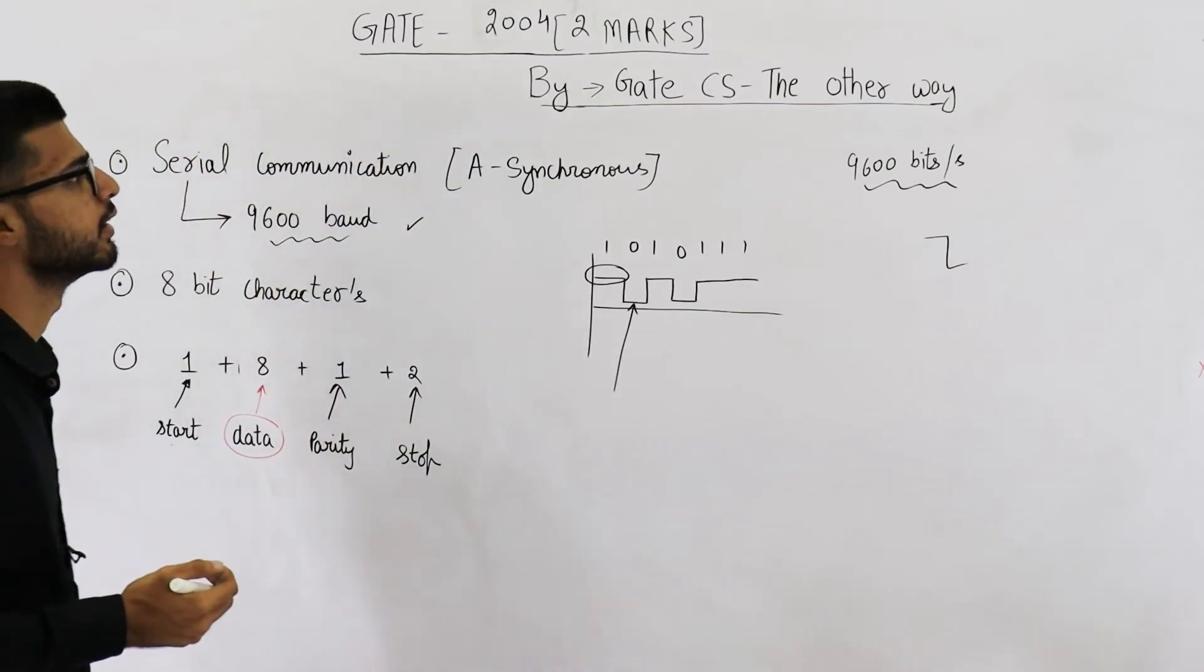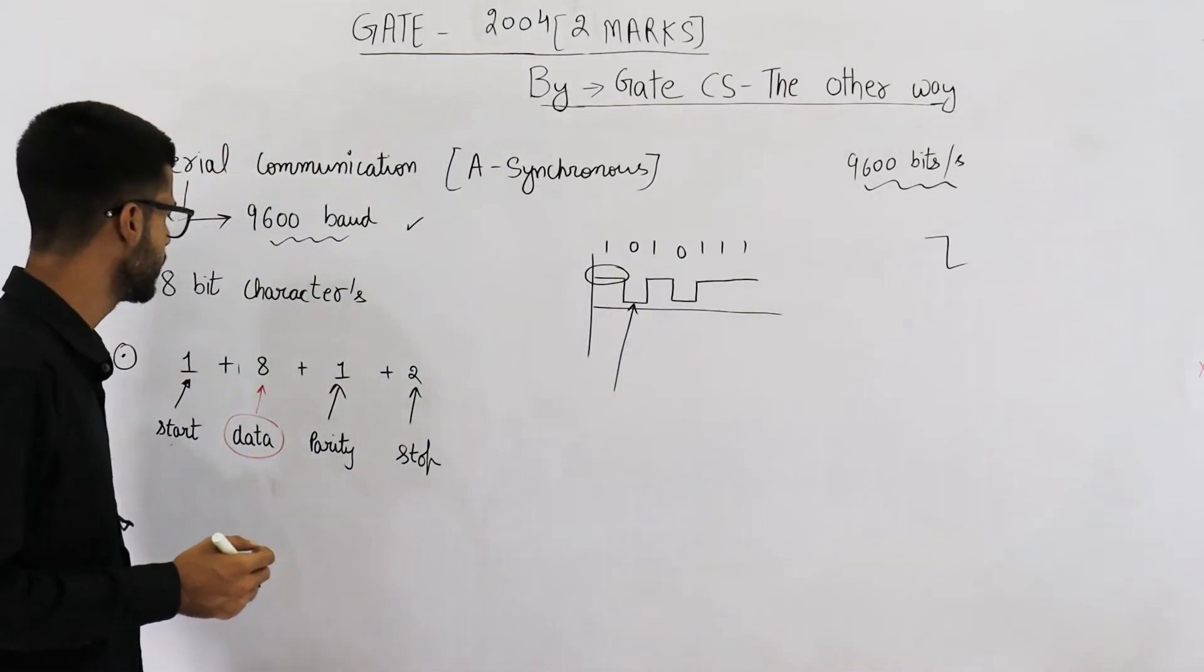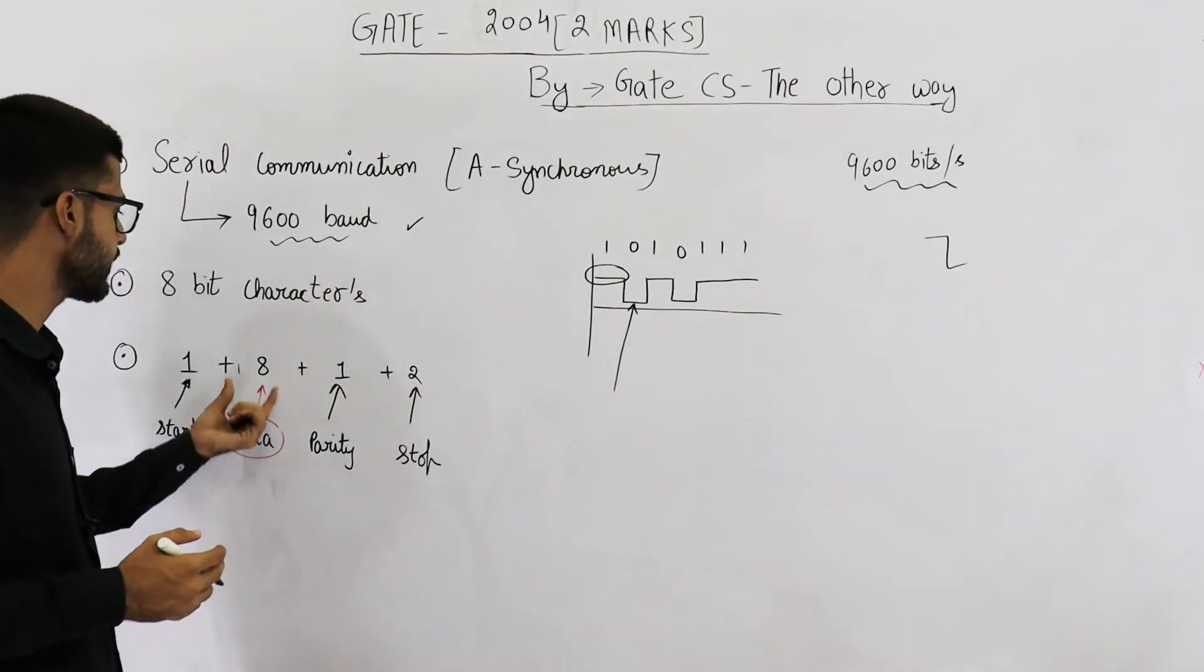Now, the question is easy. They are saying 9600 bits per second is the transmission speed and eight data bits.